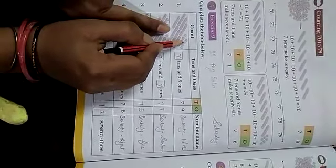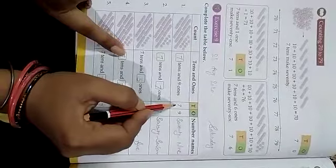Count this one. 1, 2, 3, 4, 5, 6, 7, 8, 9. 9 1s. 7 10s and 9 1s. It makes 79.